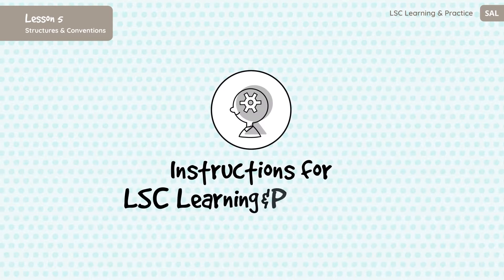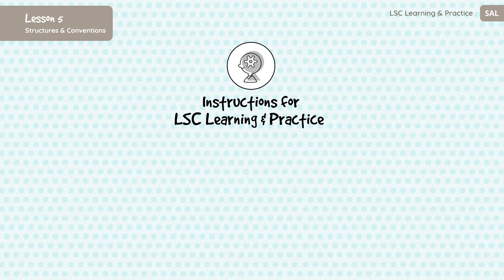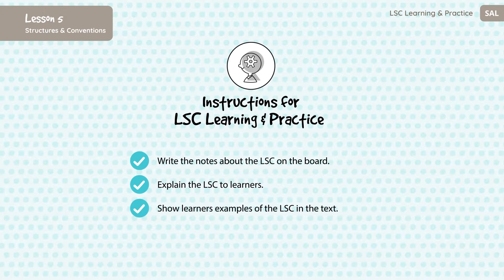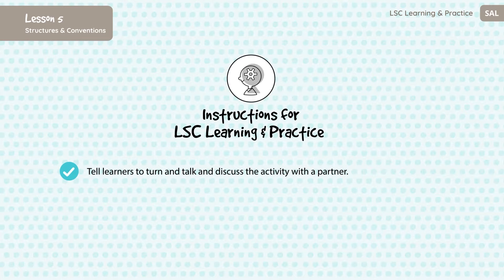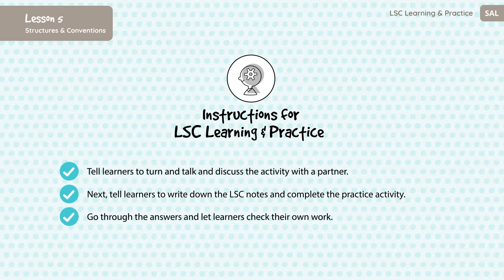Instructions for LSC learning and practice: Write the notes about the LSC on the board. Explain the LSC to learners. Show learners examples of the LSC in the text. Explain the practice activity to learners. Tell learners to turn and talk and discuss the activity with a partner. Then tell learners to write down the LSC notes and complete the practice activity. Go through the answers and let the learners check their own work.